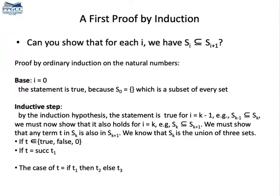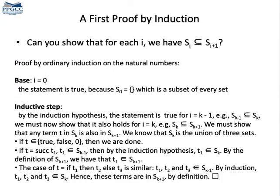So, can you try to reason about each one of these terms, these three expressions here, showing that if the term is in Sk, then it must also be in Sk plus 1? The first term means that t is a constant. I'm talking about this term here. Then we are done, because by definition the constants are in all the sets.